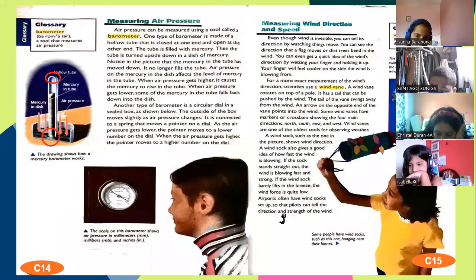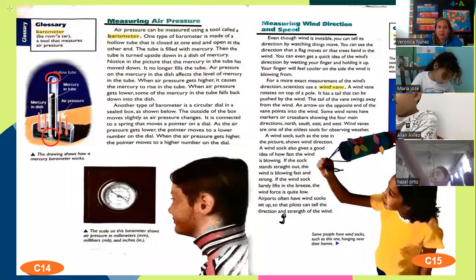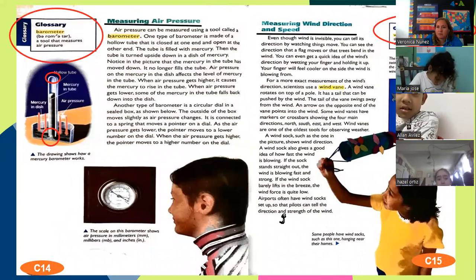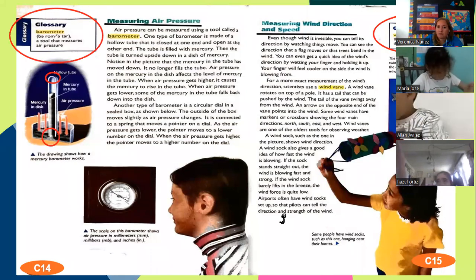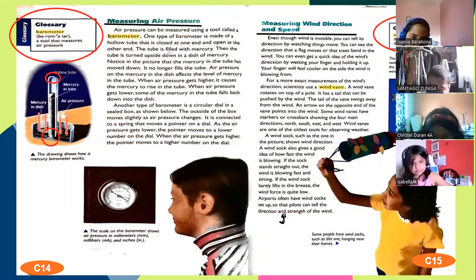Air pressure on the mercury in the dish affects the level of mercury in the tube. When air pressure gets higher, it causes the mercury to rise or go up in the tube. When air pressure gets lower, some of the mercury in the tube falls back down into the dish.